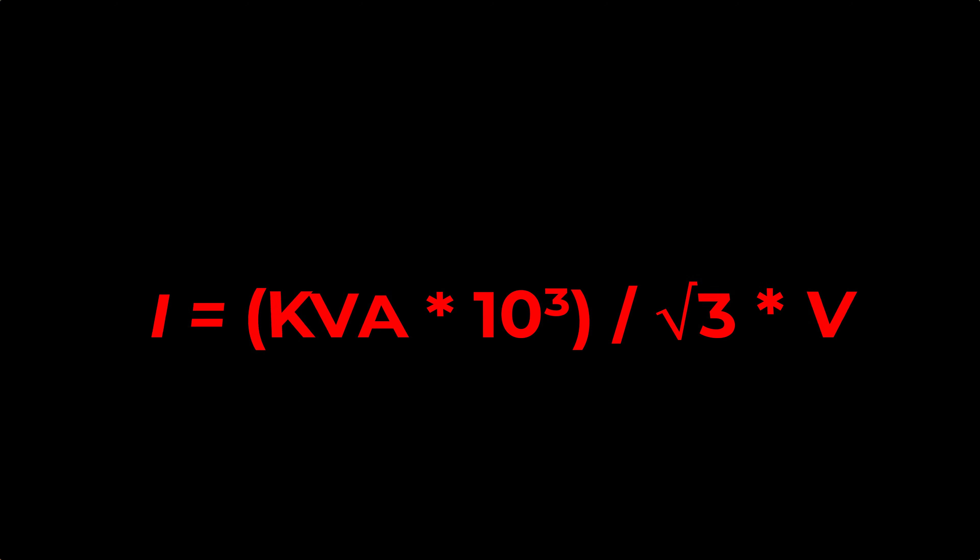Now we will calculate the secondary current. In the secondary, we apply the same formula: I = (MVA × 10⁶) / (√3 × V). The transformer is 2.2 MVA, so we use 2.2 × 10⁶. √3 is 1.732, and the secondary voltage V is 415 V. The resultant secondary current is 3,064 A.